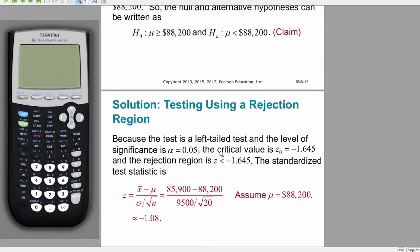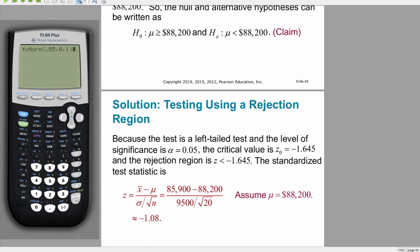Since we're thinking to the left and want to find the critical value, we're going to go into inverse normal and plug in 0.05, because we have 5% in just that left tail. That gives us a z-score of negative 1.645. Just keep that in the back of your mind — that's our critical value.